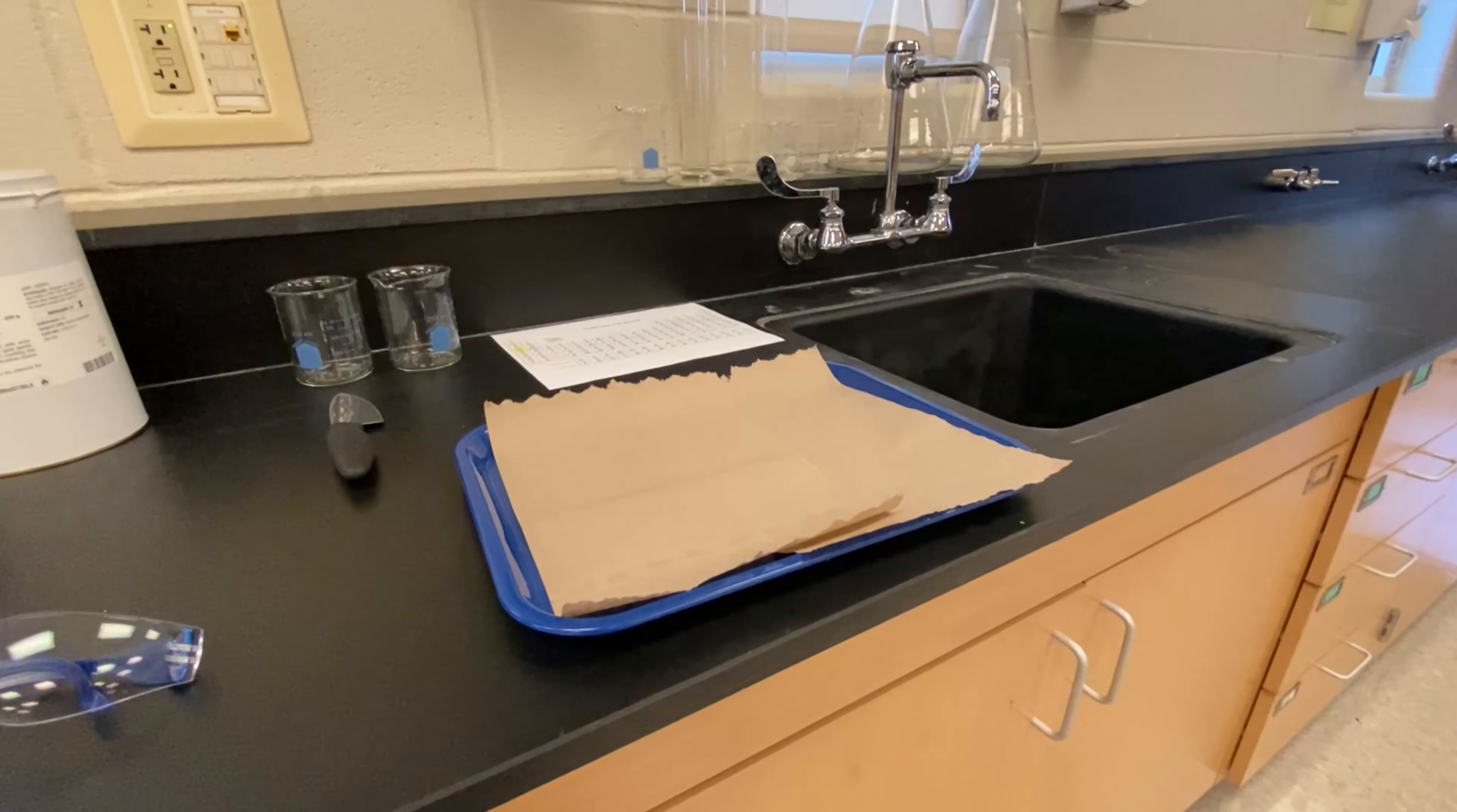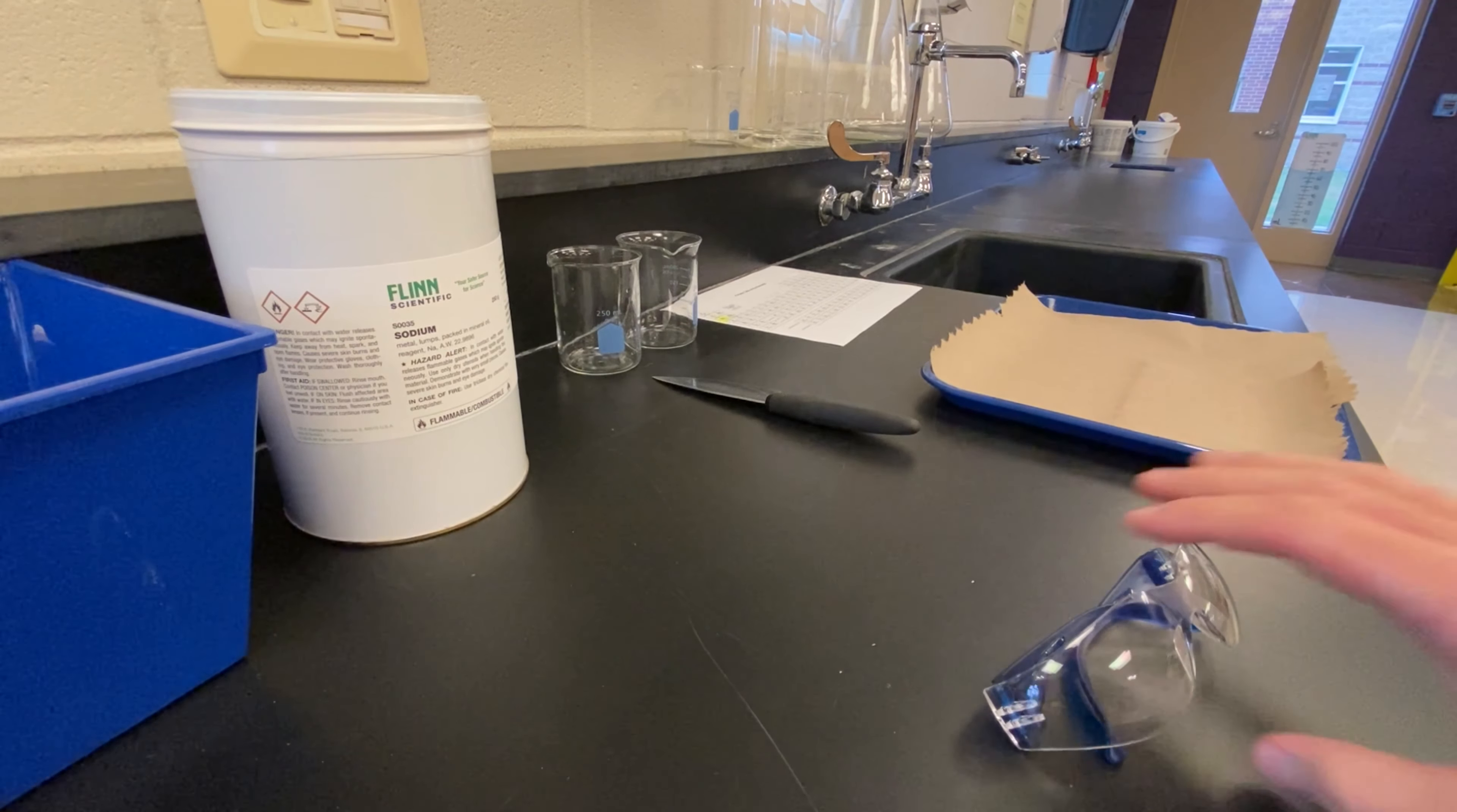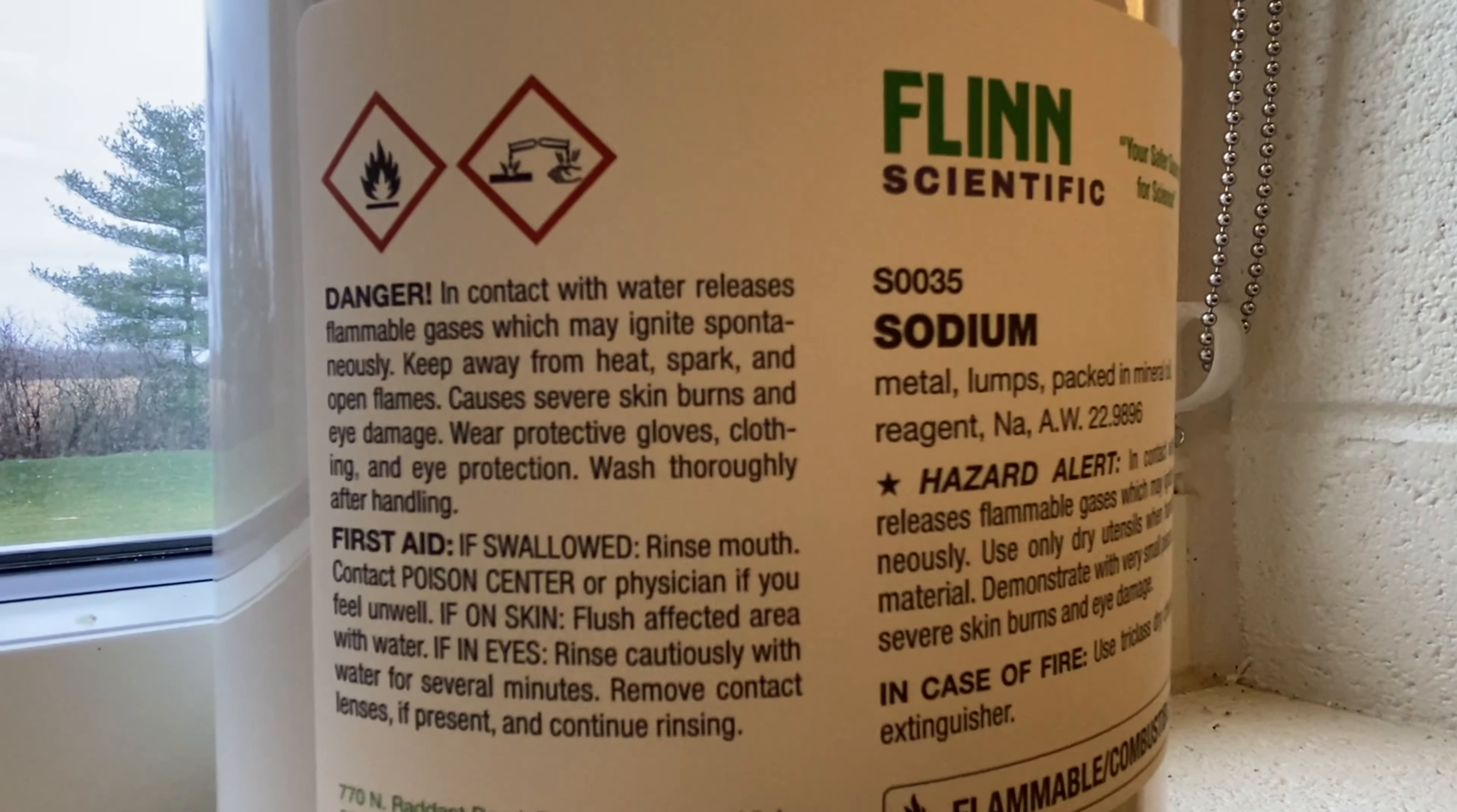We're going to be exploring the physical and chemical properties of this element on the periodic table. What your job is, is to take good observations, and we will use those observations to discuss this throughout a chemistry unit. Let's get started. As you can see here, I got a little setup of some materials that I'm going to be using in this lab today. And the first thing I'm going to want to do is make sure that I put on my goggles.